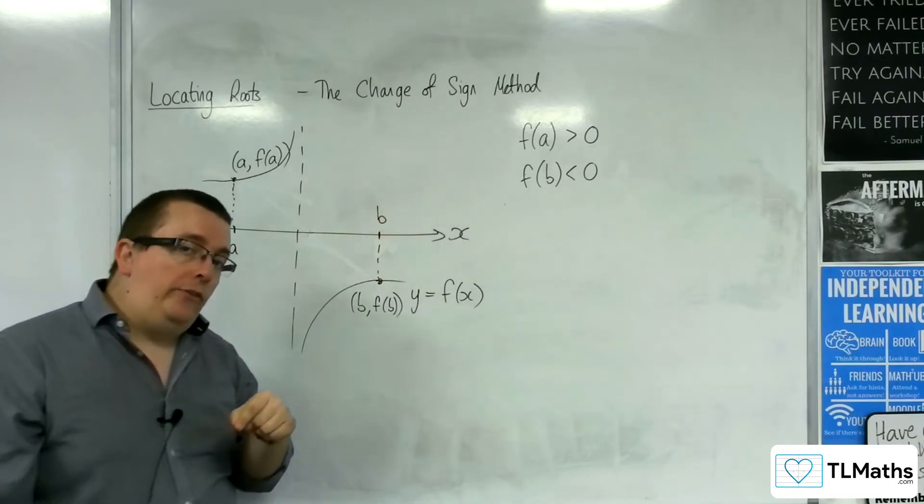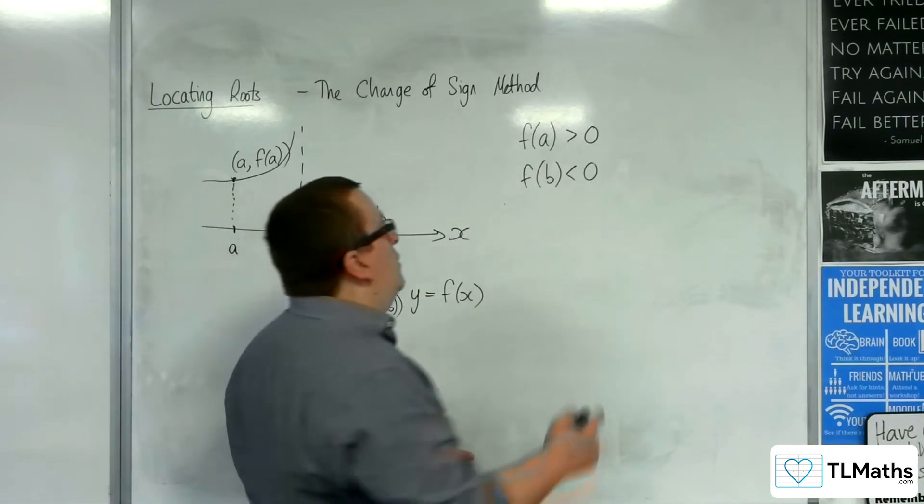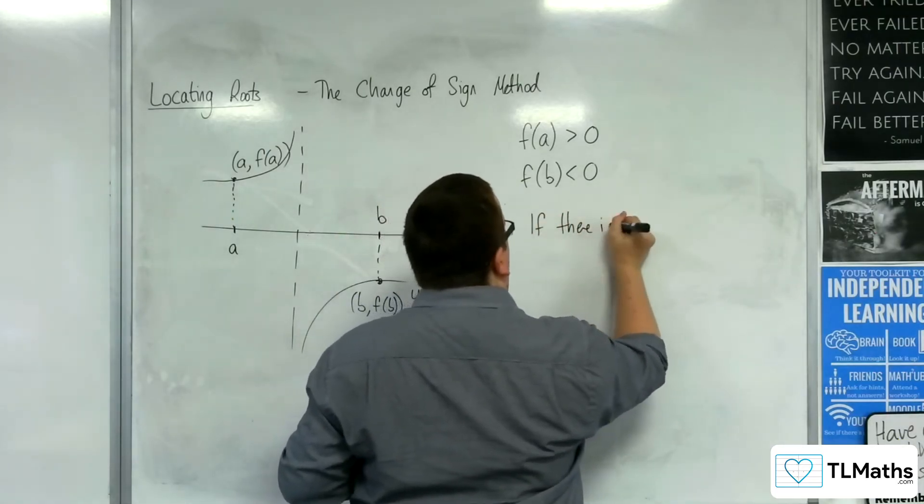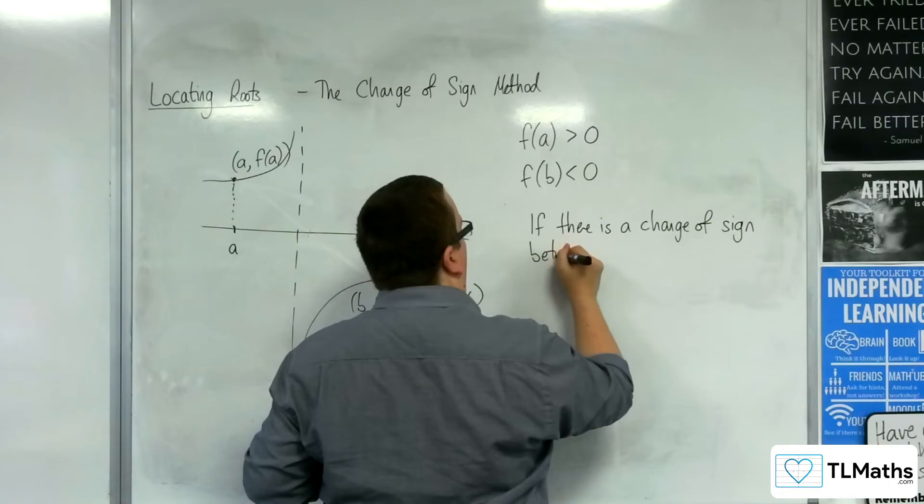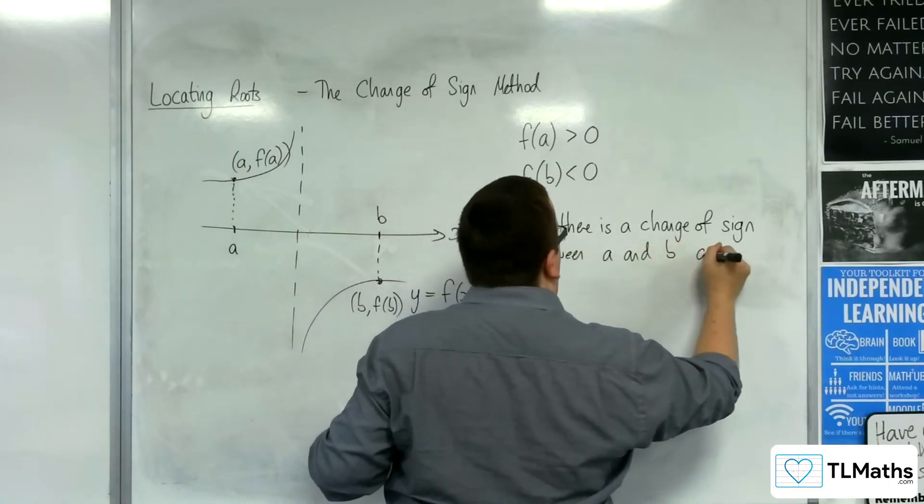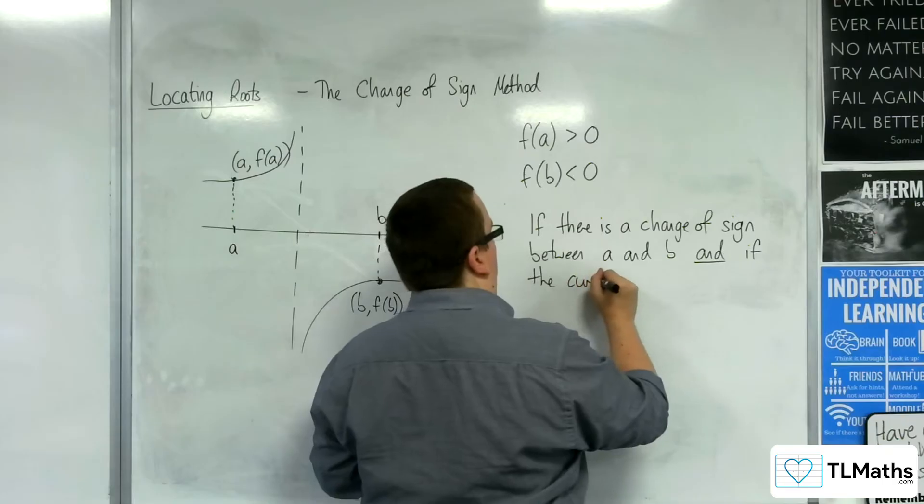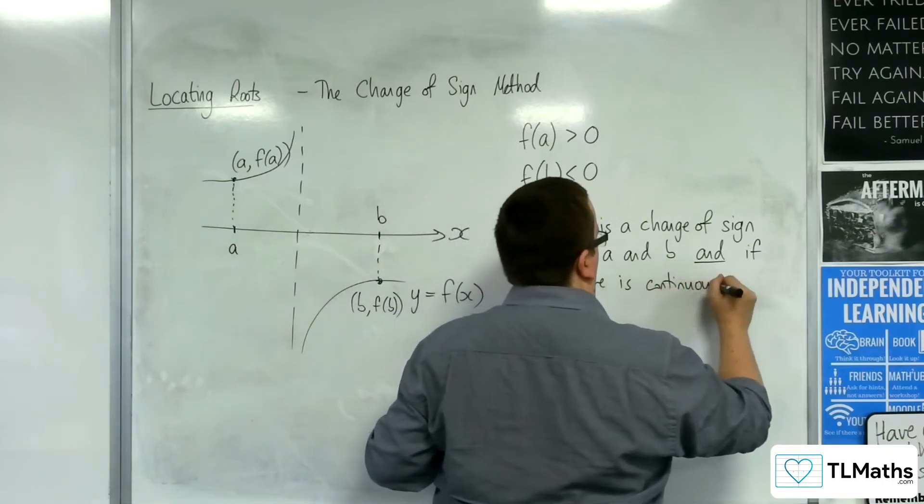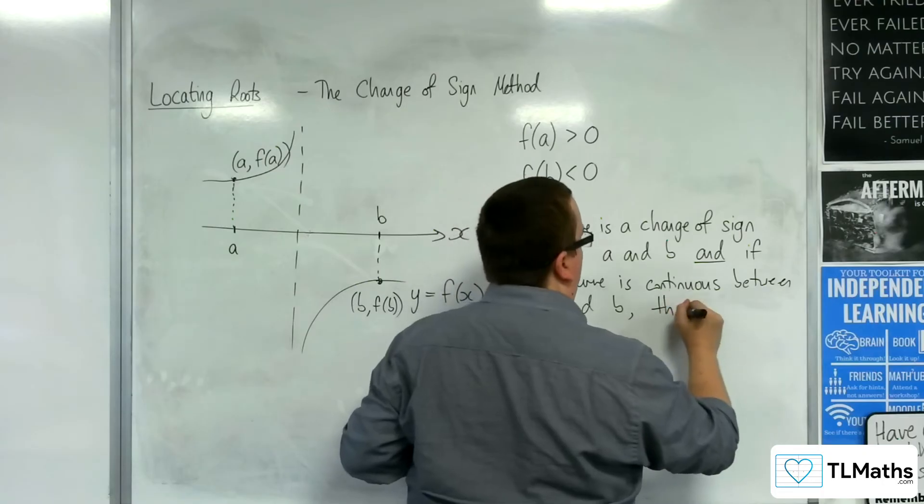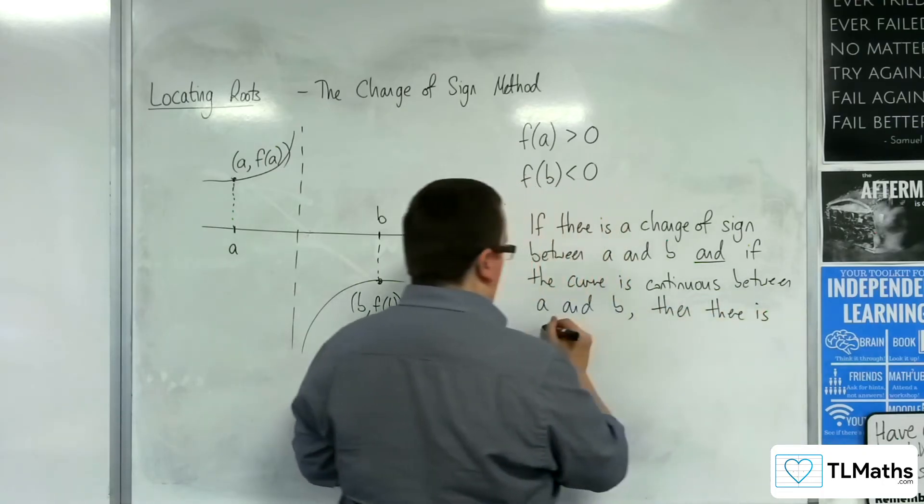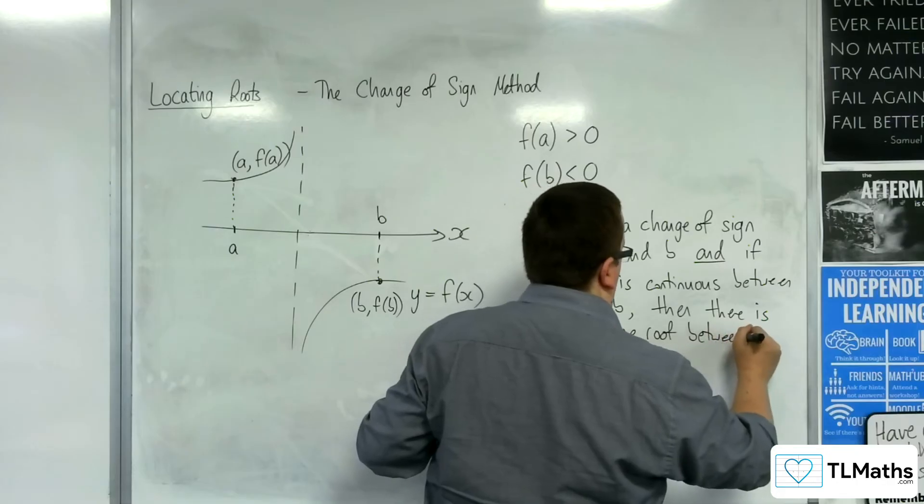So it requires that information that the curve is continuous between those two points as well. So we can say that if there is a change of sign between a and b and, this is crucial, and if the curve is continuous between a and b, then there is at least one root between a and b.